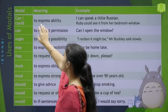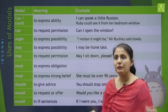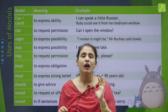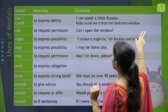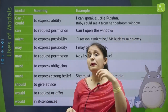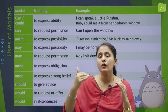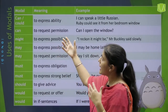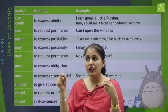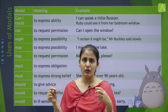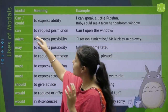Can and could — kis liye use hote hai? To express ability. For example: 'I can speak a little Russian' — ye meri ability bata raha hai, mujhe thodi Russian bolna aati hai. Next: 'Ruby could see it from her bedroom window' — ye bhi ek ability hai. So jab bhi aap koi sentence padho aur aapko lag raha hai ki woh ek person ki ability bata raha hai, to aapko can ya could ka use karna hai.